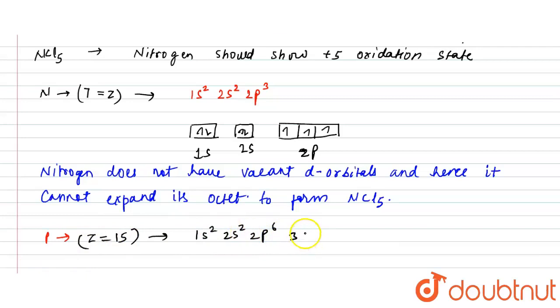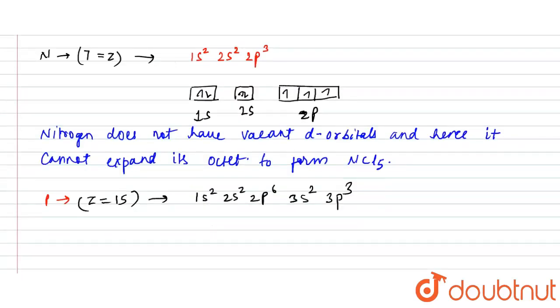Now here what you can see is that in case of n=3, there will also be 3d orbitals available.